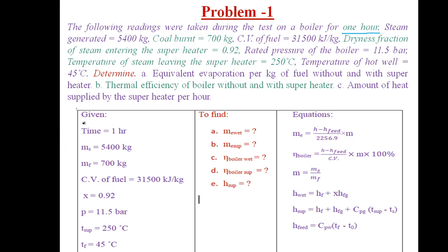We will collect the given data. Time duration is one hour. Steam generated — mass of steam generated in one hour — is 5400 kg per hour. The next: coal burnt — mass of coal burned in one hour — is 700 kg per hour. Then coming to calorific value of fuel: if we burn 1 kg of fuel it liberates 31500 kilojoules of energy. Calorific value of fuel is given as 31500 kilojoules per kg.